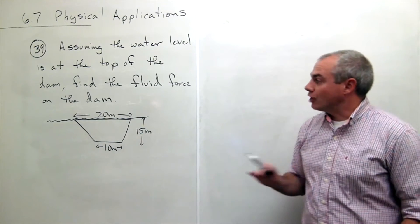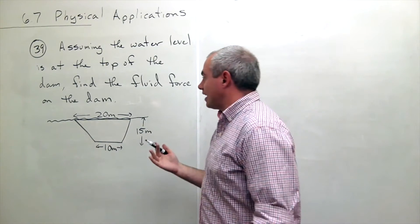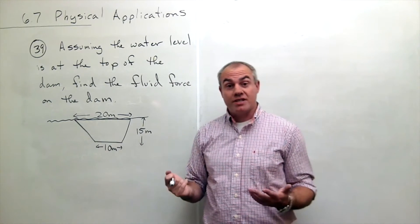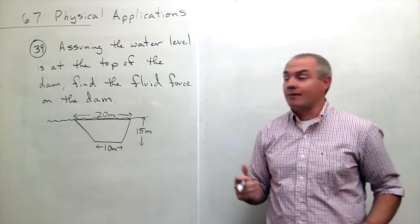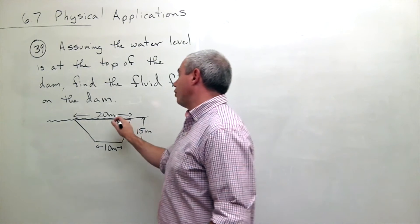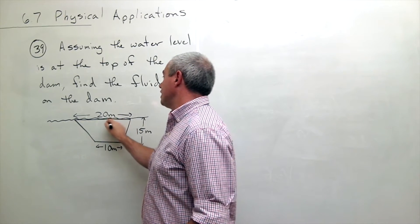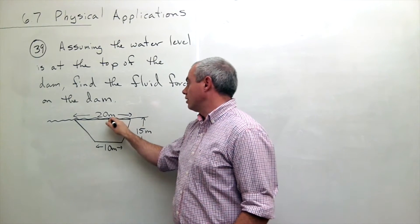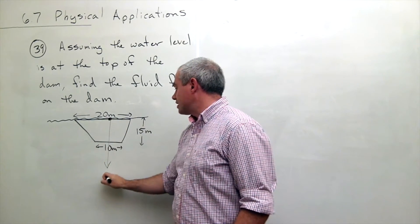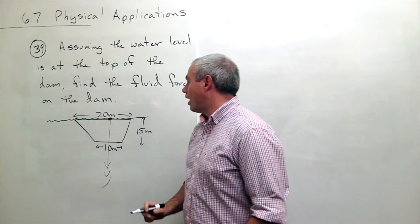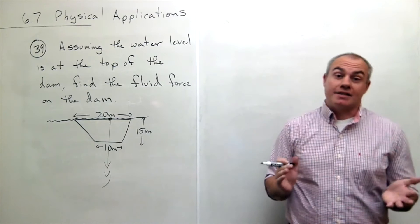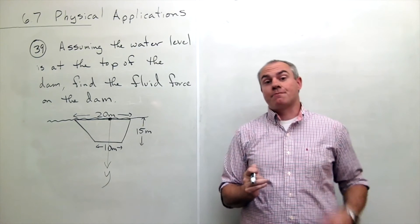So we've got this water up at the top of this dam pressing on the side and we'd like to know what is the fluid force on that side. There are lots of different ways to set it up, I'm just going to choose one of them. I'm going to put the zero of the y-axis at the top of the water, and then I'm going to say that the positive y-axis is pointed down.